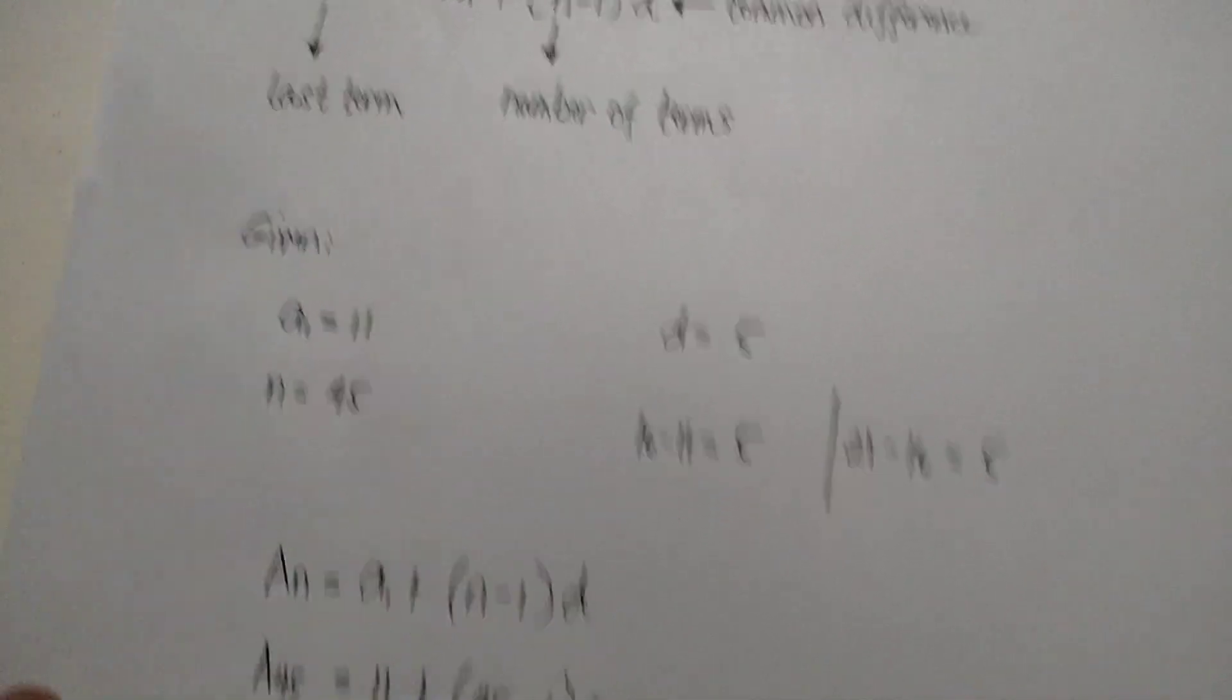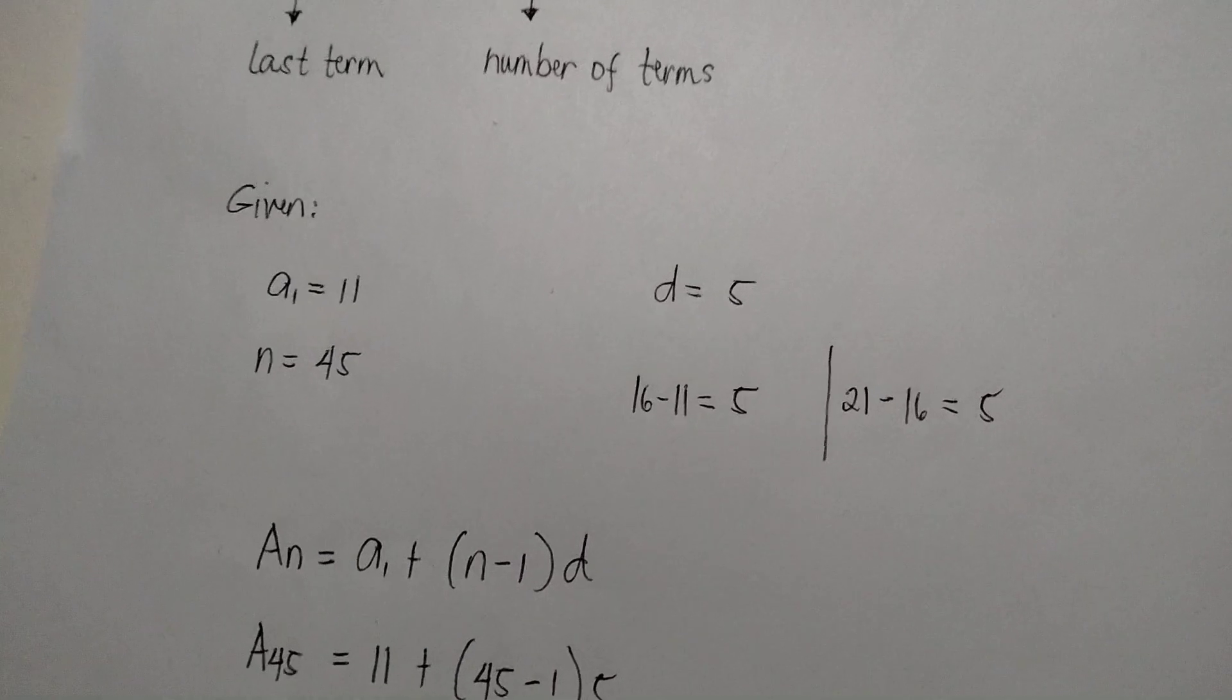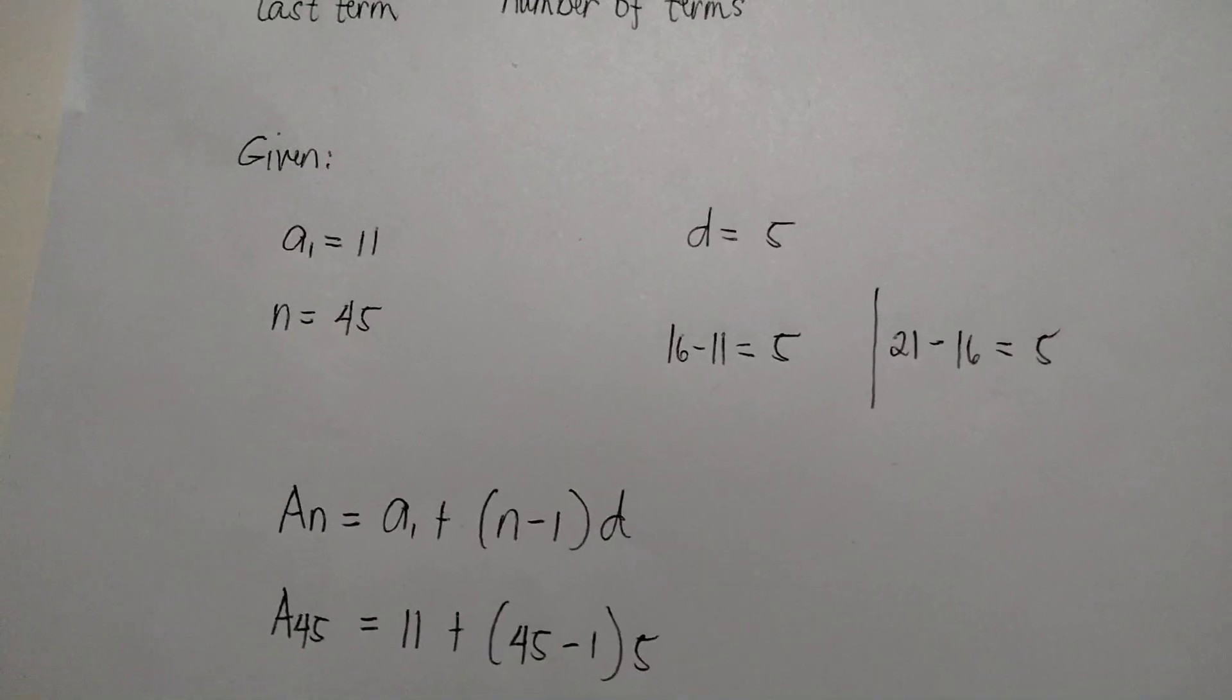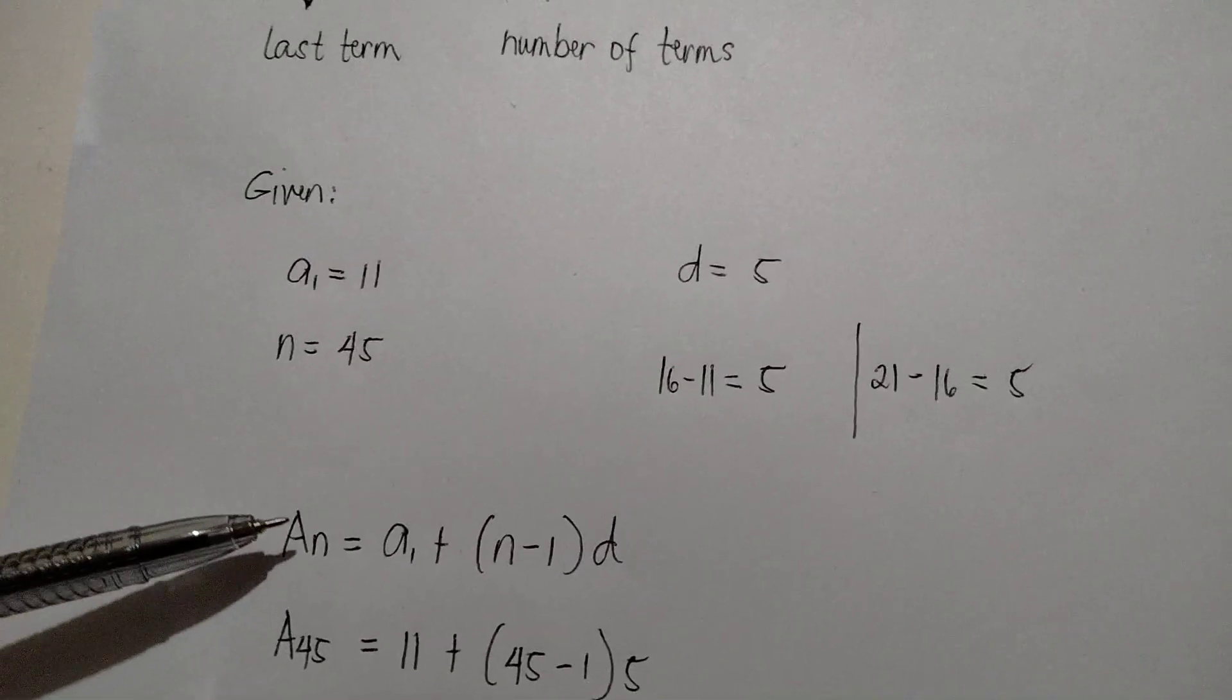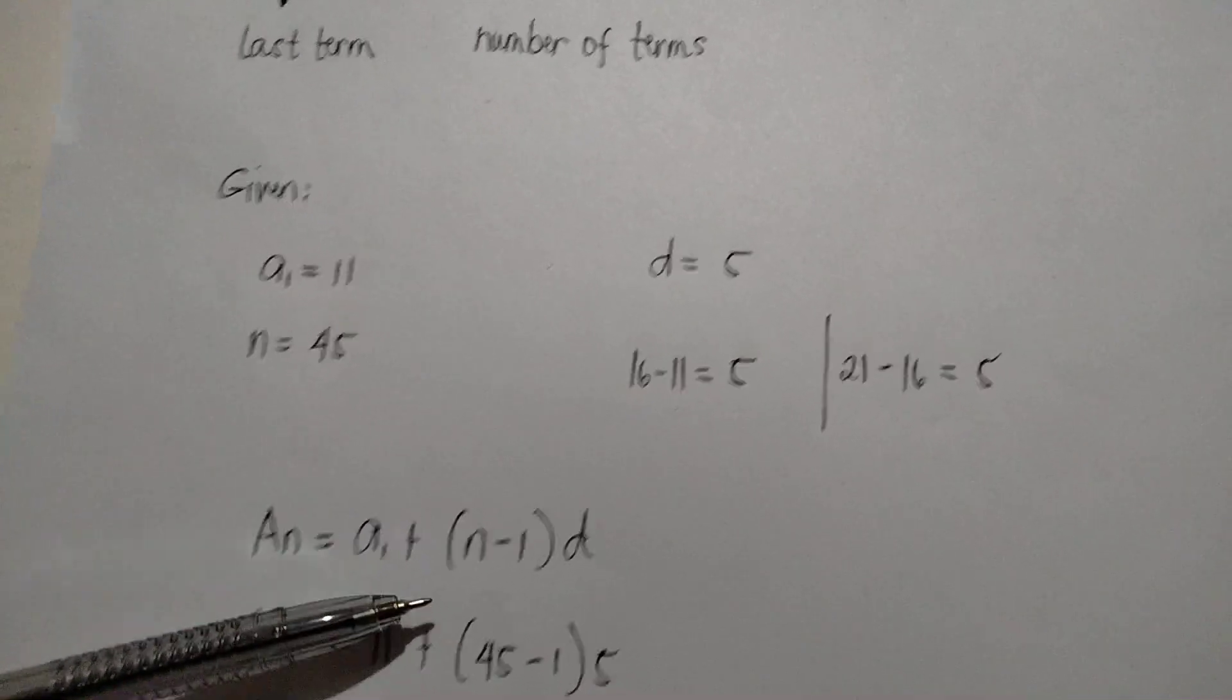Now, we are going to use this given and substitute in the formula, which is a sub n equals a sub 1 plus the quantity n minus 1 times d.